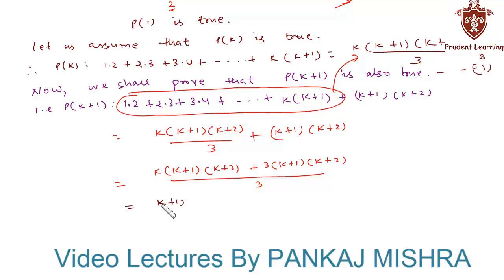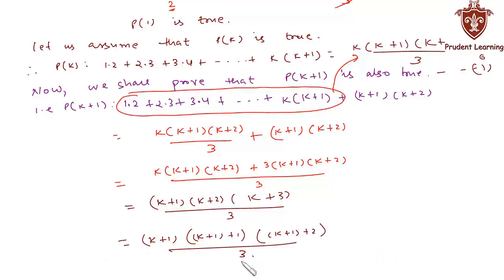This can also be written as (k+1)(k+2)(k+3)/3, which equals [(k+1)+1][(k+1)+2]/3. Thus P(k+1) is true whenever P(k) is true.